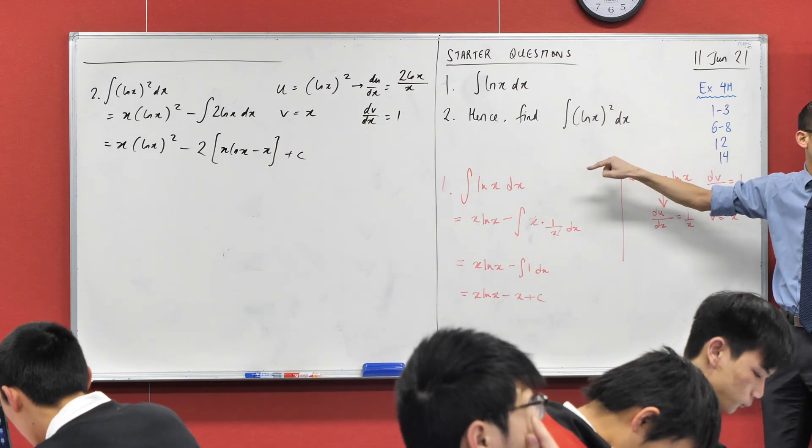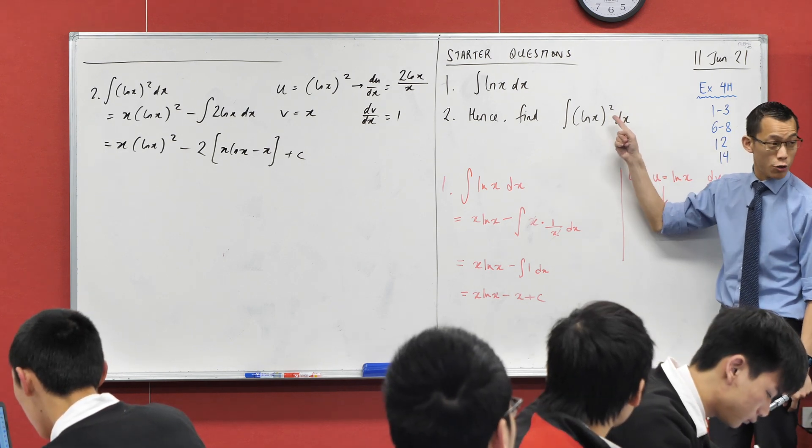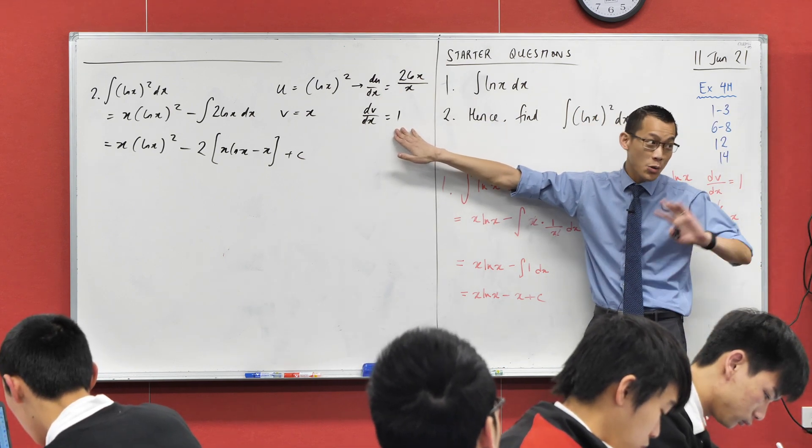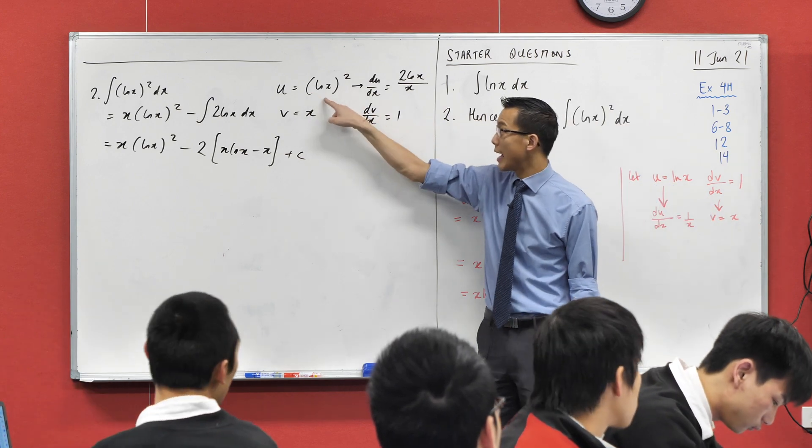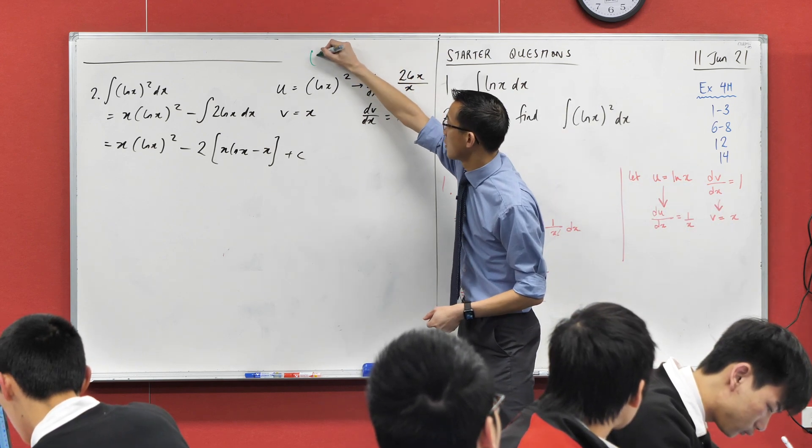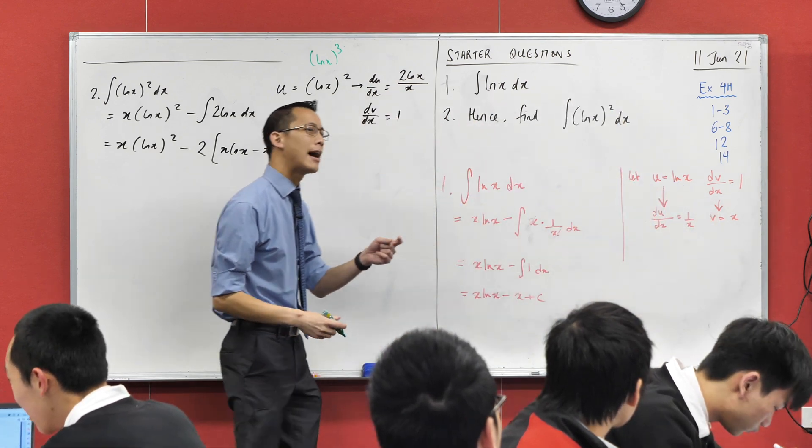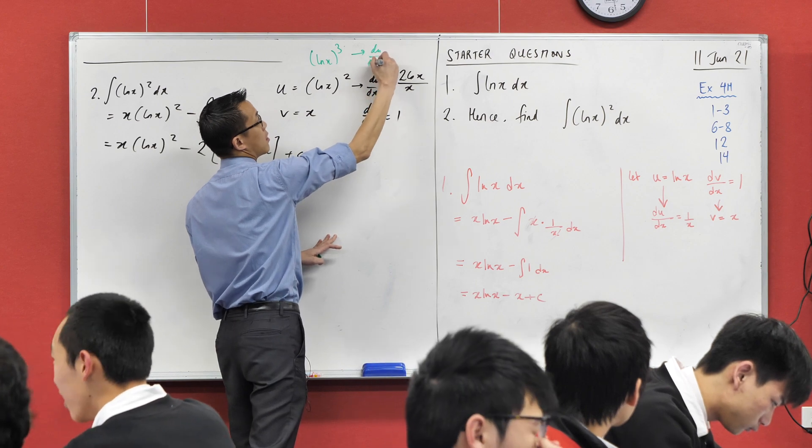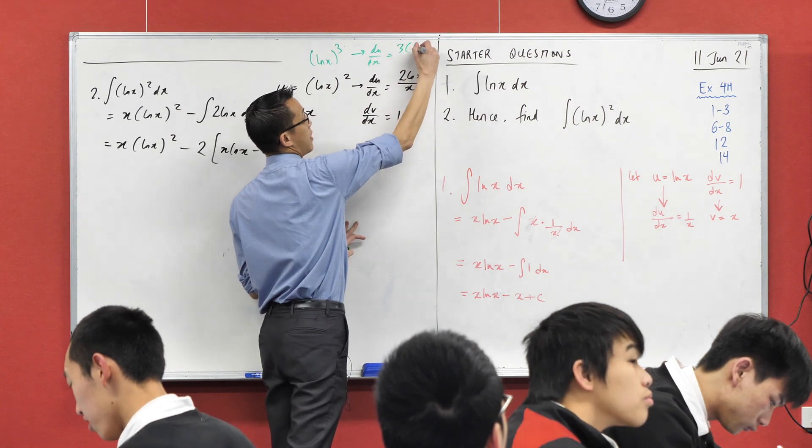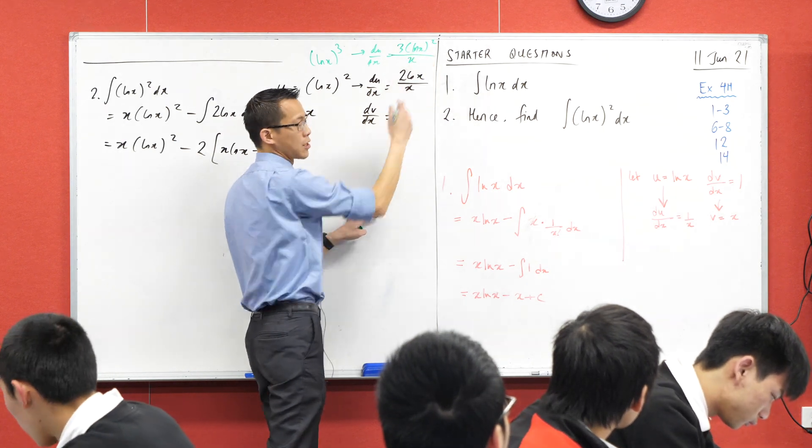Therefore what have I got? x(log x)² and then minus two lots of, I'm just going to put all of that in. Does that make sense? x log x - x and then here comes my constant. Are you satisfied with that? Hopefully you've started to realize I could keep on climbing up this ladder forever if I wanted - I could do log x cubed in theory.